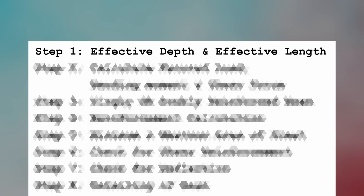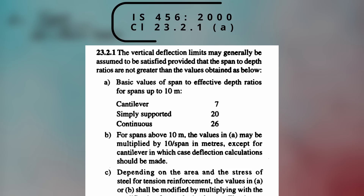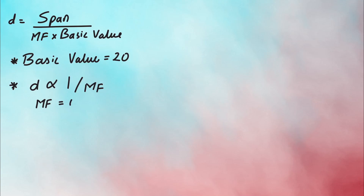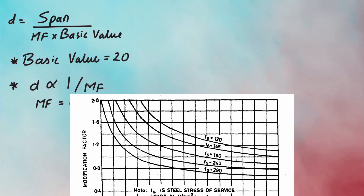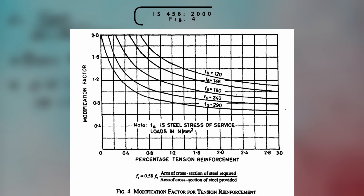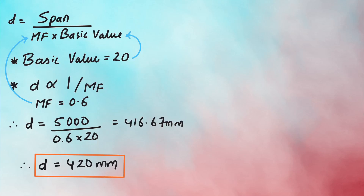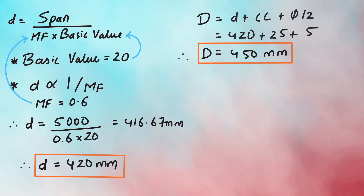Step 1 is to find the effective depth and effective length of the member. Effective length can be found using the formula as per clause 23.2.1a. For a simply supported beam, the basic value is taken as 20. The modification factor MF is a multiplier for the basic value and is inversely proportional to the required depth. We assume MF as 0.6 for now and calculate it properly later per figure 4 of IS 456-2000. Substituting gives an effective depth of 420 mm, and total depth D is 450 mm (effective depth plus clear cover plus half bar diameter).